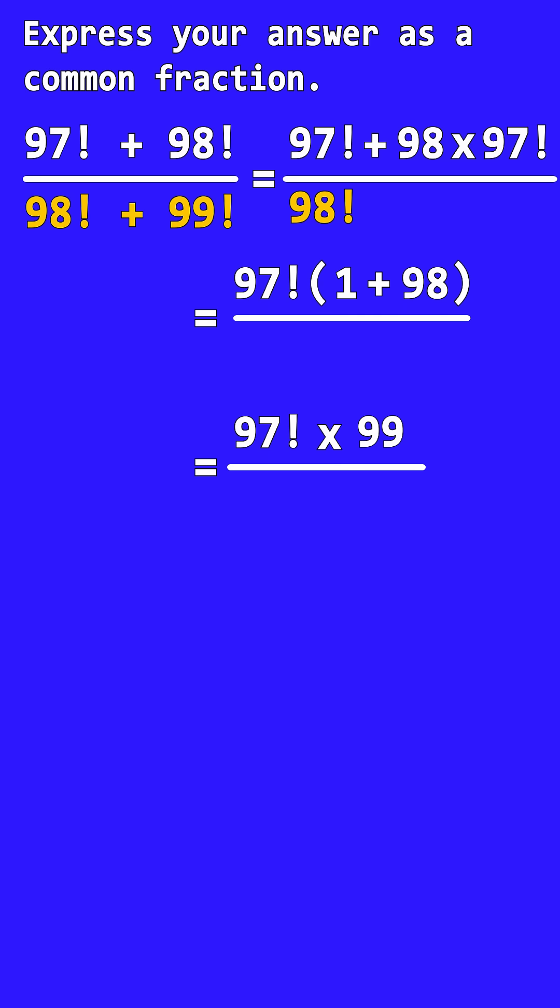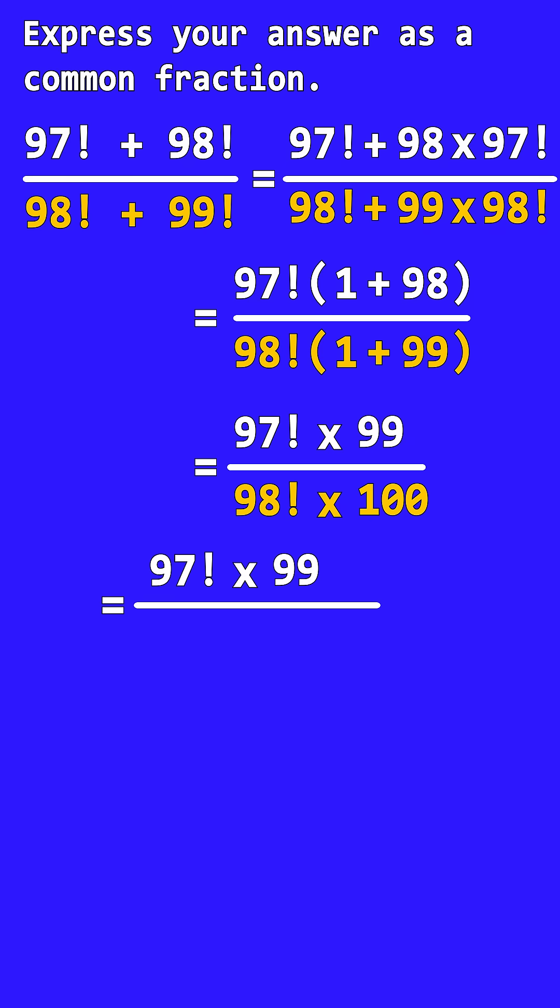In the denominator, we have 98! and 99!. We can write 99! as 99 × 98!. Factoring out 98!, we get 98!(1 + 99), which equals 98! × 100. We can write 98! as 98 × 97!.